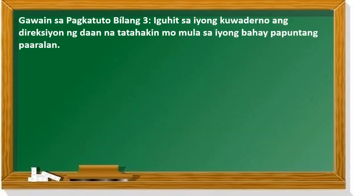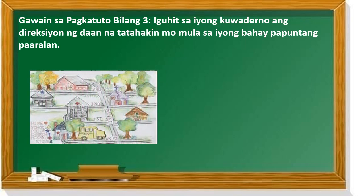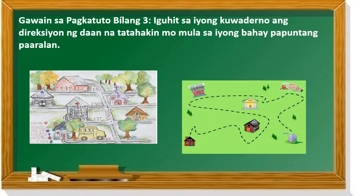Gawain bilang pangatlo: iguhit sa iyong kwaderno ang direksyon ng daan na natatahakin mo mula sa iyong bahay papuntang paaralan. Mayroong halimbawa dito — para siyang mapa mula sa iyong bahay, ano mga daraanan mo bago ka makapunta sa school. Halimbawa lang ito.